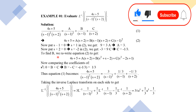To find B, rewrite the equation by expanding: A(s + 2) + B(s − 1)(s + 2) + C(s − 1)². Expanding B(s − 1)(s + 2) gives B(s² + s − 2), and expanding C(s − 1)² gives C(s² − 2s + 1). Comparing coefficients of s² on both sides: 0 = B + C, so B = −C. Since C = −1/3, we get B = 1/3.